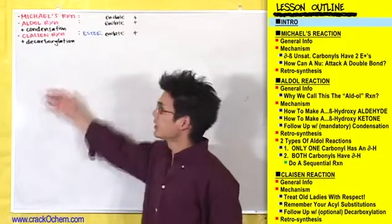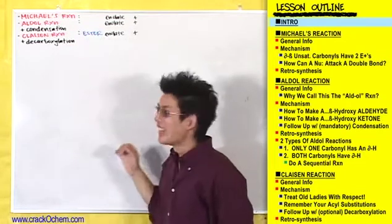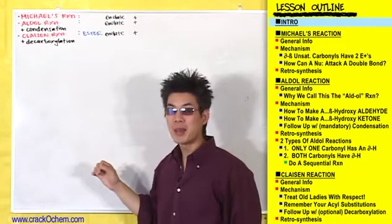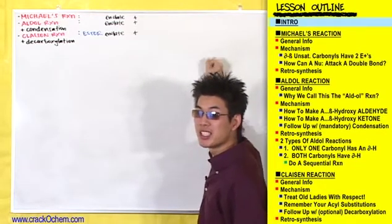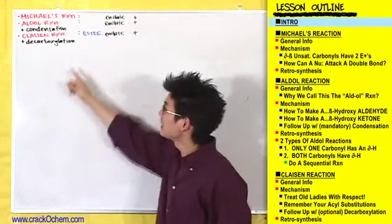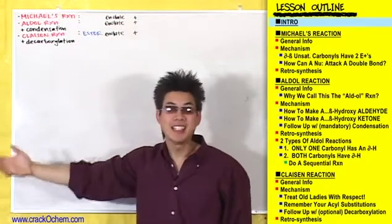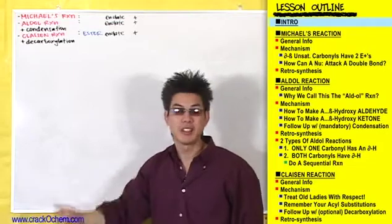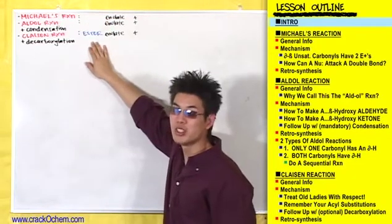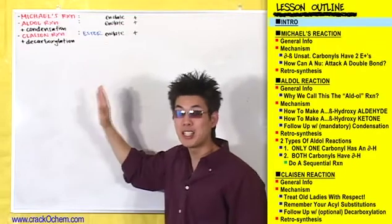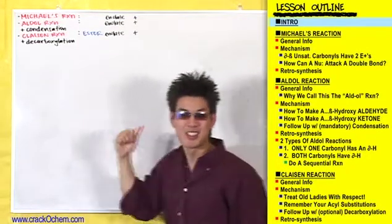Now that I've filled you in on a little bit about the Claisen reaction, let's go ahead and knock each one of these reactions out one by one. In each one of these reactions, all that's going to happen is you take an enolate and add it to a different type of compound, giving you a specific product. It was only for the Claisen reaction that you had to use a specific ester enolate. For a Michael's reaction or an Aldol reaction, use any enolate you want — any compound you can make an enolate out of, like an aldehyde, a ketone, or an ester. For the Claisen reaction, you use a specific ester enolate. Let's get started.